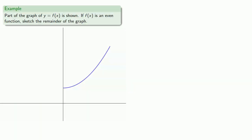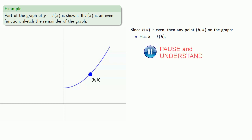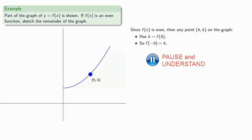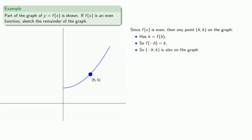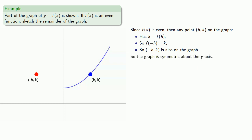So for example, if we know that part of the graph of y equals f of x is shown, and if f of x is an even function, we can sketch the remainder of the graph. Since f of x is even, any point h, k on the graph has k equal to f of h. So f of negative h is also equal to k, and so negative h, k is also on the graph. The graph is symmetric about the y-axis.